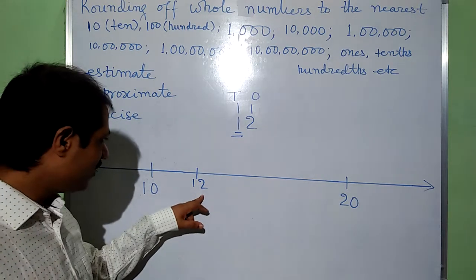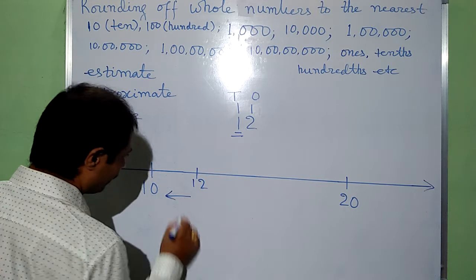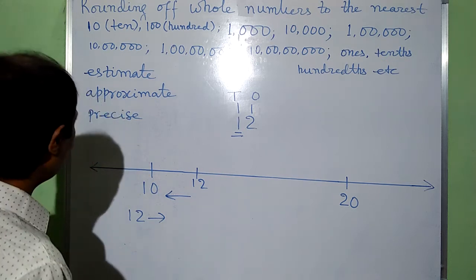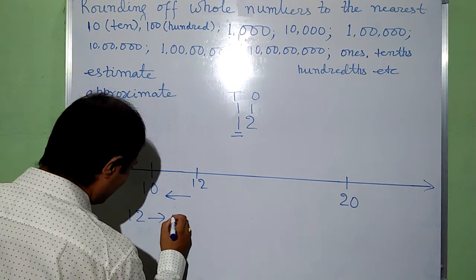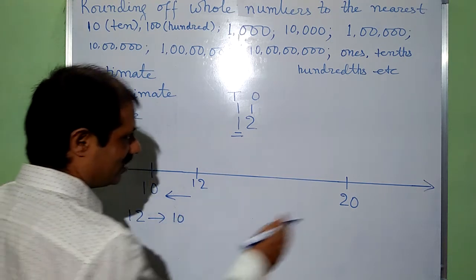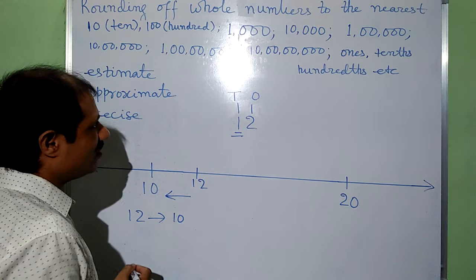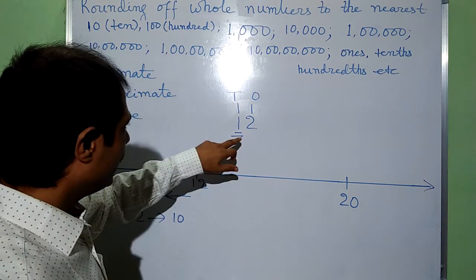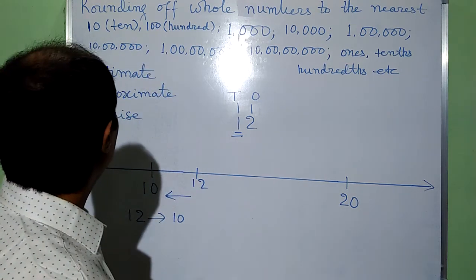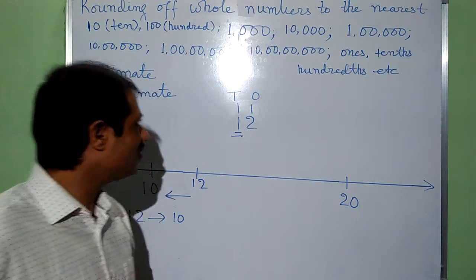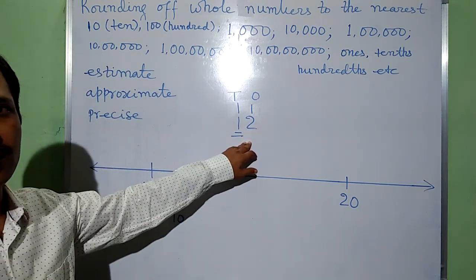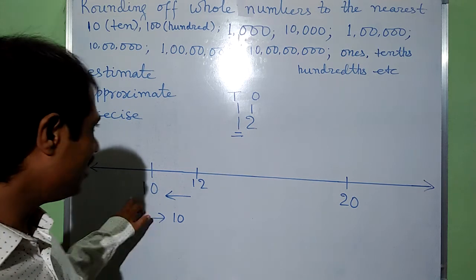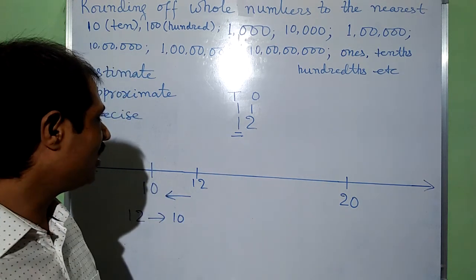It is visible that 12 is nearer to 10 than 20. So this 12 will be estimated as 10 instead of 20. In another way we can understand it: we have to round 12 to the nearest multiple of 10. Here 10, 20, 30, 40 and so on are multiples of 10.